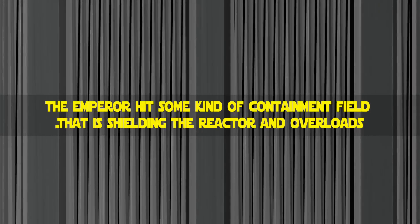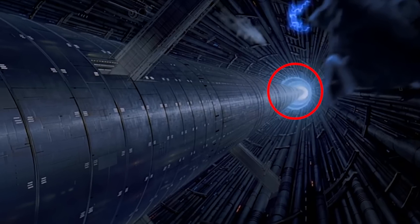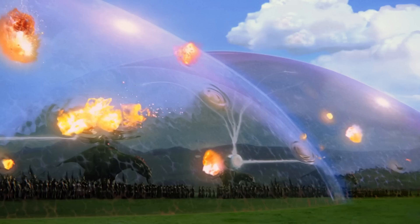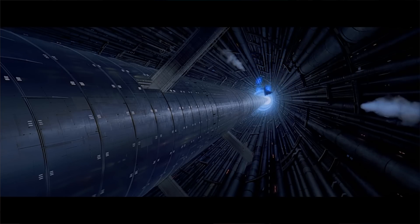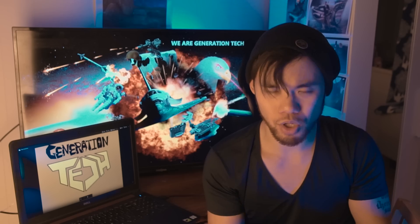Number 2: The Emperor hits some kind of containment field shielding the reactor and overloads it. If you look closely at the footage, there are two bluish rings at the bottom of the reactor shaft, which look like a deflector shield of some kind. A giant open shaft to the middle of the Death Star should have some protection over it. When the Emperor hits the blue rings, there is a massive explosion, and shortly after, the blue rings turn less blue. But normally, when deflector shields get taken down, they simply disappear — so why was there a massive explosion?